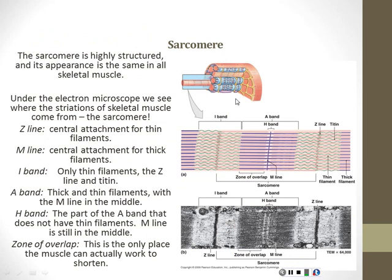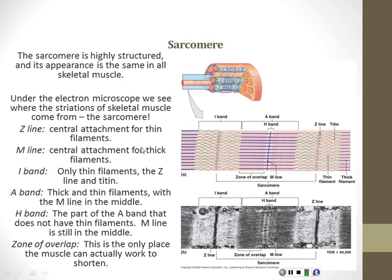Everybody's favorite topic was of course the sarcomere. Review it — they're easy questions to get right as long as you've reminded yourself about what the different things are. The Z line is at the center of the thin filaments; the M line is the center of the thick filaments. Then we have different bands: in the I band there are only thin filaments; in the A band there are both thick and thin filaments; in the H band there are only thick filaments. This arrangement allows the thin and thick filaments to interact, and that interaction causes muscle to contract — through the process where calcium is released and troponin moves tropomyosin away from the binding sites on actin.